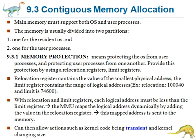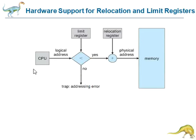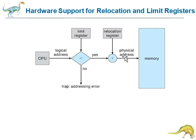As shown in the diagram, if the logical address provided by the CPU is less than the limit register, the condition is satisfied and the address is added to the relocation register to produce the physical address. That physical address is then mapped to physical memory. If the logical address is not less than the limit register, we get an addressing error — a trap error.